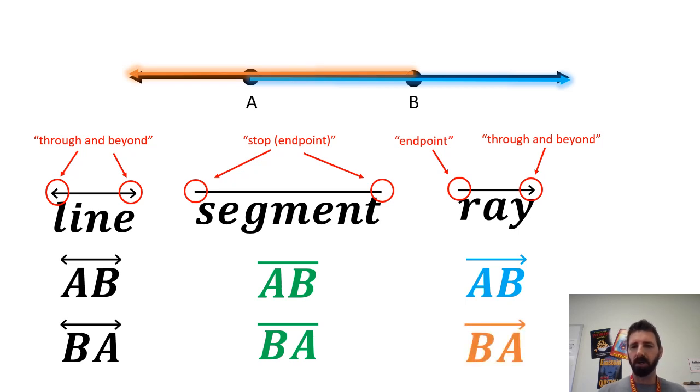we would name it the same way with an endpoint designation at B going through A. Direction does matter here. Notice that the symbols always point to the right when we're naming a ray. We just switch the letters around to designate the endpoint and which direction we're going.